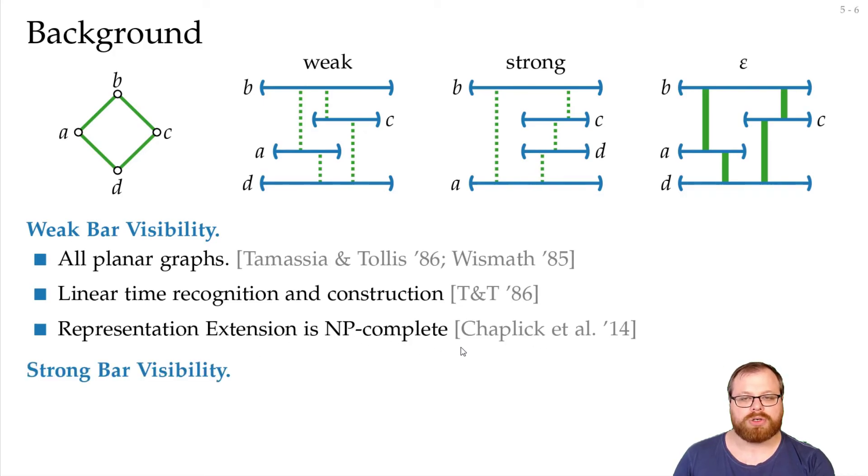For strong bar visibility it's already NP-complete to recognize if a graph has one. It immediately follows that the representation extension problem is also NP-complete because it's NP-complete for the special case where the subgraph that's already drawn has zero vertices.